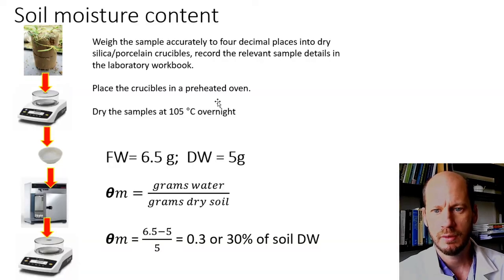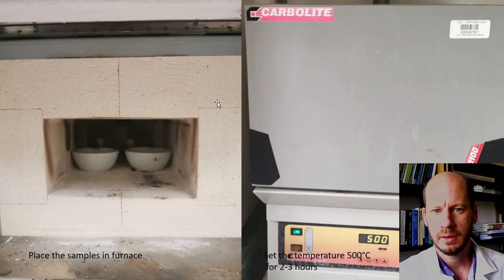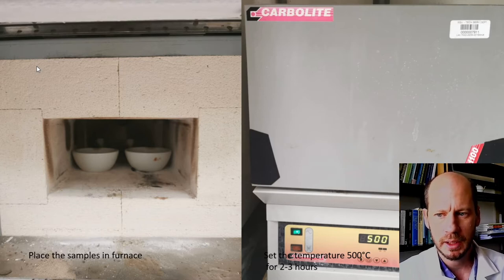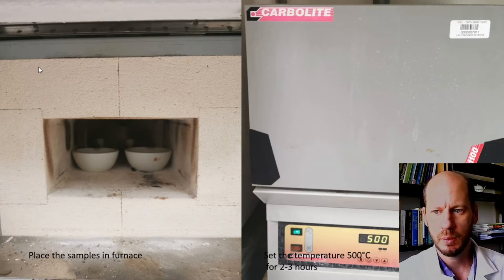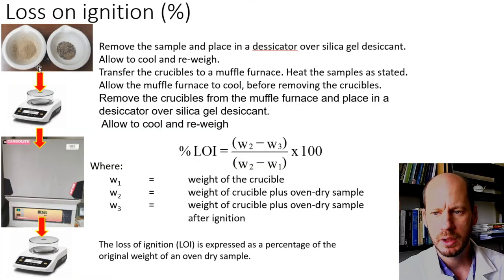For loss on ignition, we will use the dry soil — accurately measured and cooled down — and place them in a furnace set to 500 degrees Celsius. We're going to leave it in the furnace for three hours at 500 degrees so the organic matter is completely burned. After finishing the furnace burning, we will take the samples, allow them to cool down in the desiccator, and then weigh the samples again and compare the weight before and after burning.